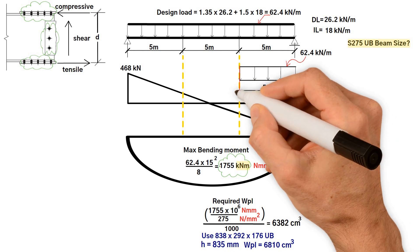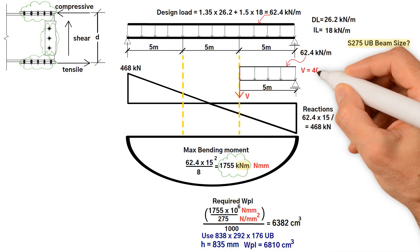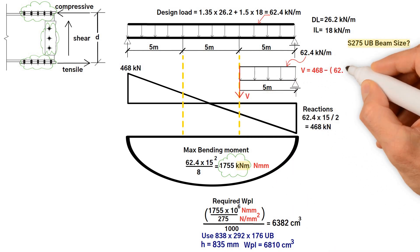Firstly, determine the shear force at the splice, V which equals 468 minus 62.4 times 5, which equals 156 kilonewton.